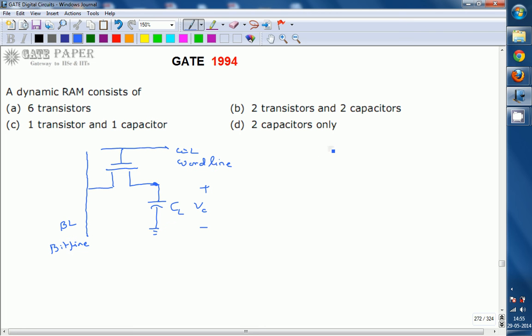If WL equals 0, the MOSFET transistor is in the OFF condition, so the capacitor cannot store the bit line voltage. The capacitor stores the previous value, acting as a memory element.